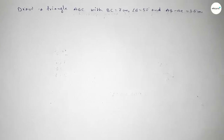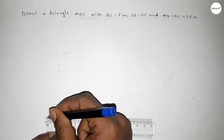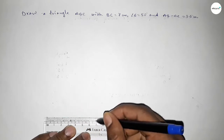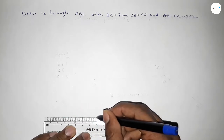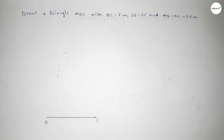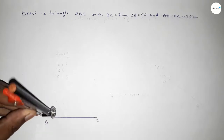First of all, we have to draw a line of length 7 centimeters. Taking point B at one end and point C at the other. Now we have to draw a 50 degree angle at point B.